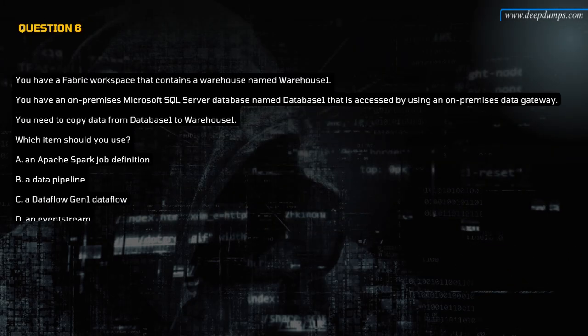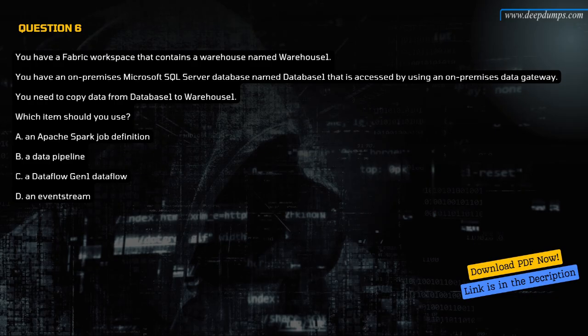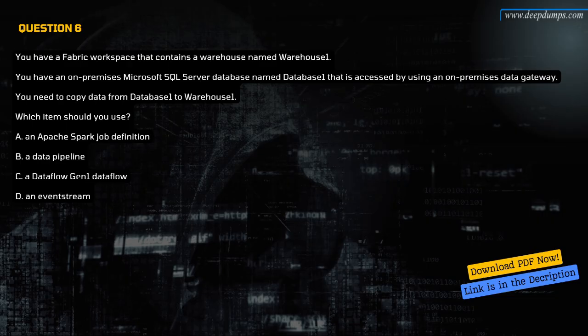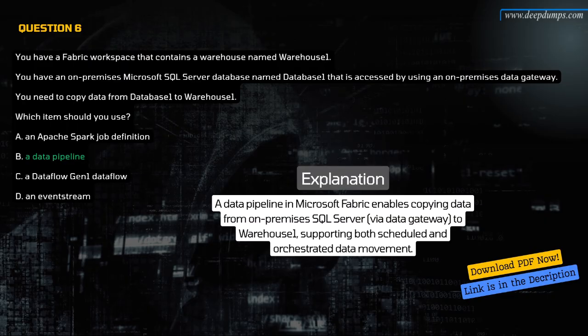Question 6. This is similar to Question 5 but with a different options set — please mark accordingly in the exam. You have a Fabric workspace with a warehouse named Warehouse 1 and an on-premises SQL Server database named Database 1 accessed via an on-premises data gateway. You need to copy data from Database 1 to Warehouse 1. A. An Apache Spark job definition. B. A data pipeline. C. A data flow Gen 1 data flow. D. An event stream. The correct answer is B. A data pipeline, which supports scheduled and orchestrated data movement from on-premises SQL Server via data gateway.